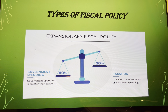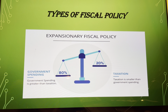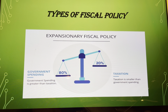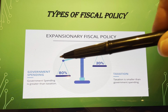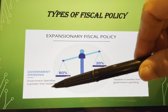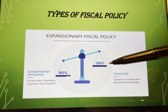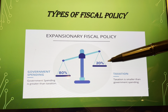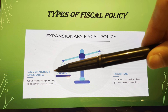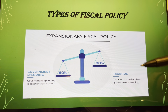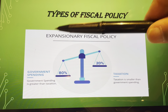There are different types of fiscal policy. The first type is expansionary fiscal policy, where government spending is greater than taxation — for example, spending is 80 percent while taxation is only 20 percent, meaning taxation is smaller and spending is higher.